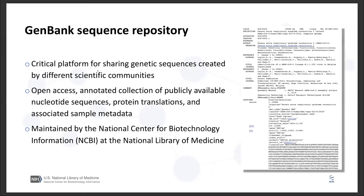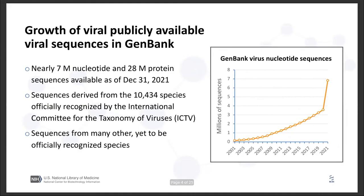There are protein translations and associated sample metadata, like where the sequence was attained, the host, and the environmental conditions. GenBank is maintained by NCBI at NLM. Over the past few years, the GenBank repository has grown to include more than 7 million nucleotide and 28 million protein sequences, derived from more than 10,000 species officially recognized by the International Committee for the Taxonomy of Viruses, and of course many more sequences belonging to yet-to-be officially recognized species. Together, the volume and heterogeneity of the sequence set causes a lot of unique issues in the curation of viral sequence data.